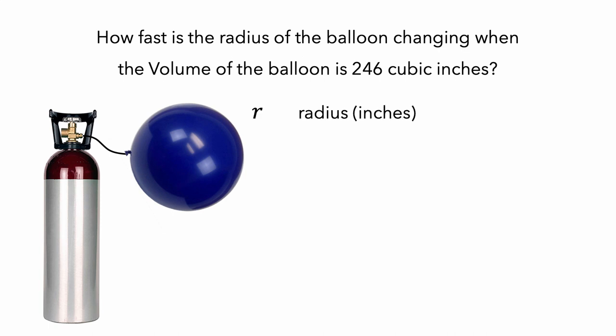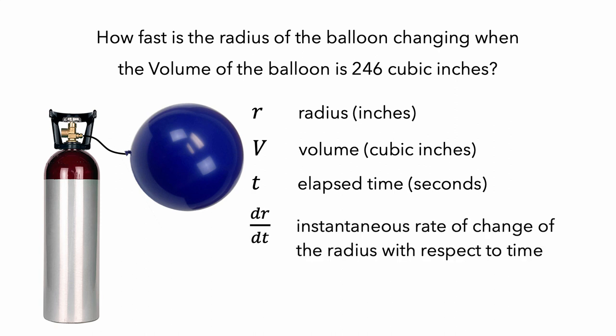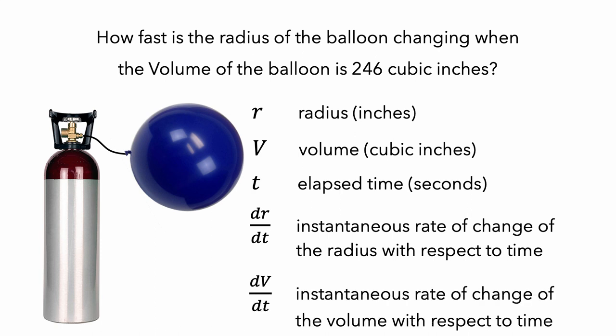If we let r represent the radius of the balloon in inches, v the volume of the balloon in cubic inches, and t the number of seconds elapsed since the balloon started filling with air, then dr/dt is the instantaneous rate of change of the radius of the balloon with respect to time — that is, how fast the radius of the balloon is changing — and dv/dt is the instantaneous rate of change of the volume with respect to time.